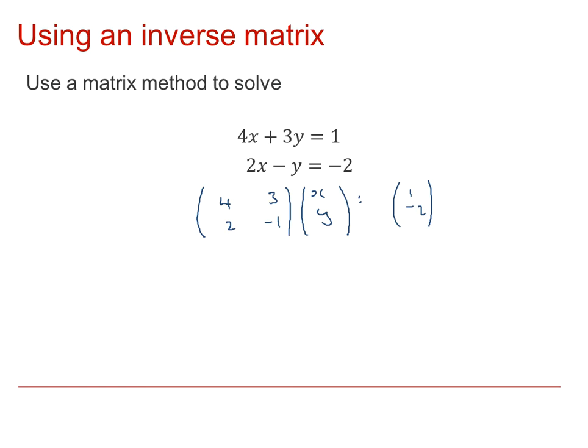Because I've got a matrix here, I can multiply by the inverse of the matrix, and that will then give me the identity on the left-hand side. Multiplying by the inverse of that matrix, which I'd already calculated on the previous slide, to be 1 tenth, and then (1, 3; 2, -4).